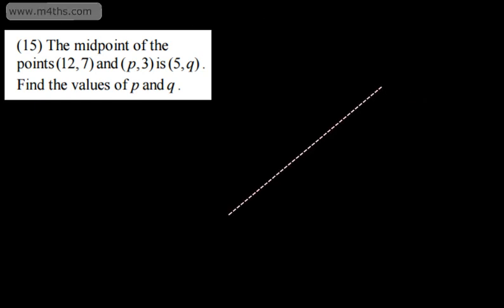So what we've got then are the points 12 comma 7 and P comma 3. So if I put P comma 3 here, so P comma 3, then we're going to have a midpoint and then we're going to have the end point just here. And the end point is going to be 12 comma 7. So that's the end and then we've got now the midpoint is 5 comma Q.